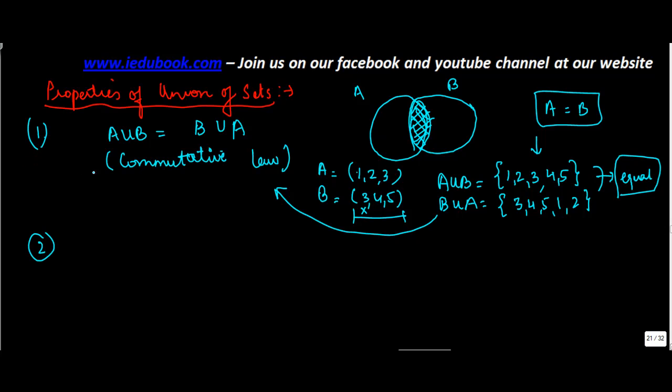Let's see the second property. A union B union C is equal to A union B union C.